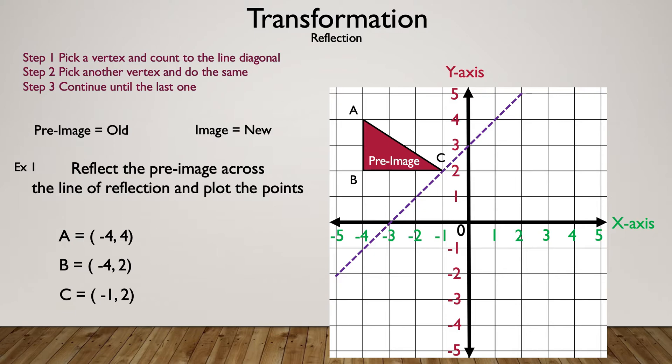Let's read the question: reflect the pre-image across the line of reflection and plot the points. We already have the points for the pre-image, so now let's find the points for the image. We're going to start with vertex A.